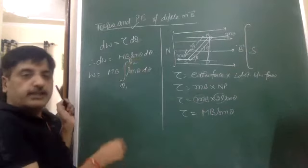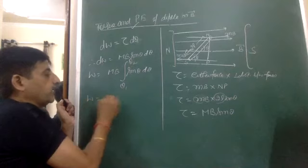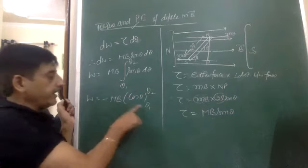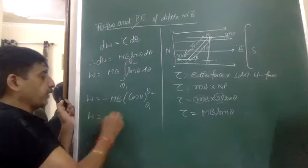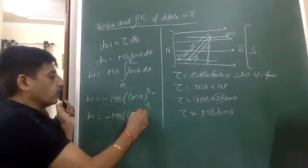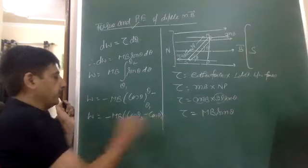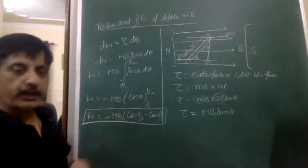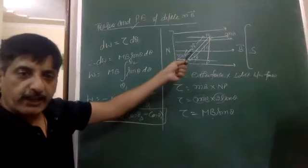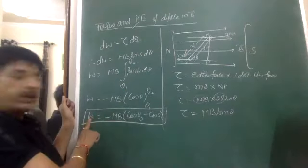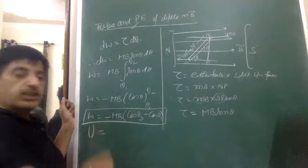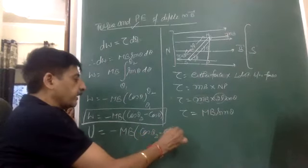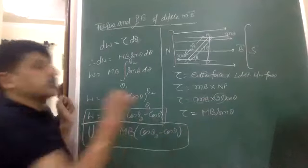Integrating, the work done is minus MB cos theta, evaluated from theta1 to theta2: W = -MB(cos theta2 - cos theta1). This gives the work needed to rotate the dipole from angle theta1 to theta2. This stored energy is the magnetic potential energy. Using this formula, the potential energy of the magnetic dipole is U = -MB cos theta.